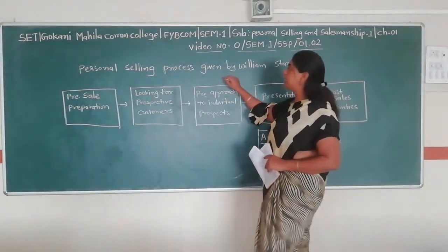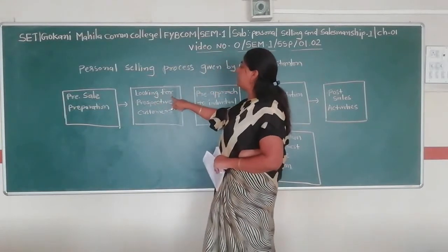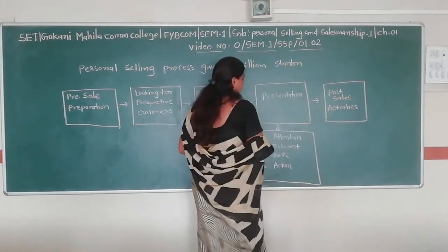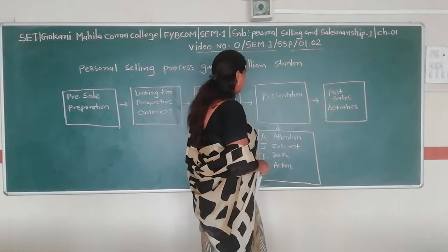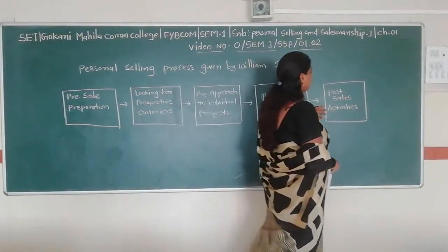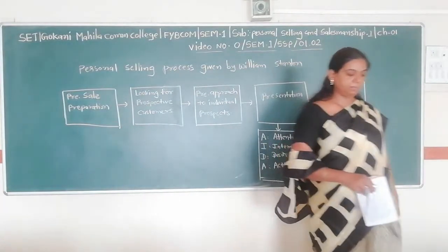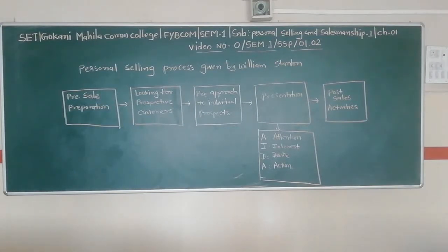So please note the personal selling process given by William Stave: first is pre-sale preparation, second is looking for prospective customers, third is the pre-approach to the individual prospect, fourth is the presentation following the AIDA model — Attention, Interest, Desire, Action — and last is post-sale service activities. Please write these down in your book. Thank you so much.